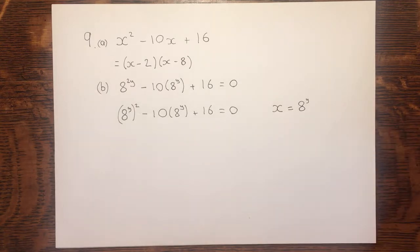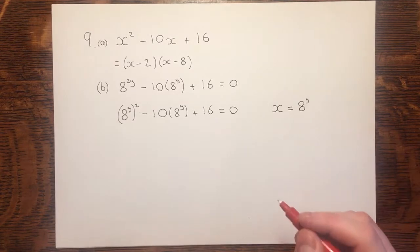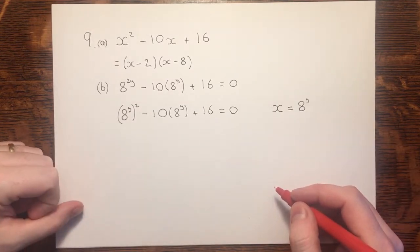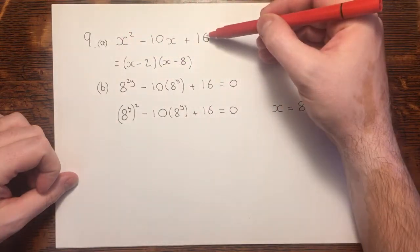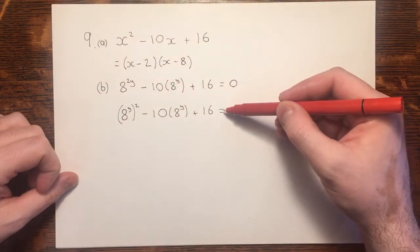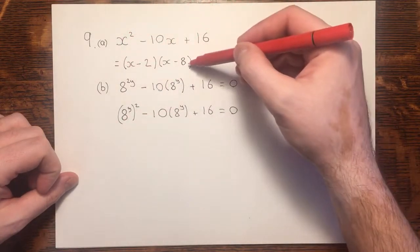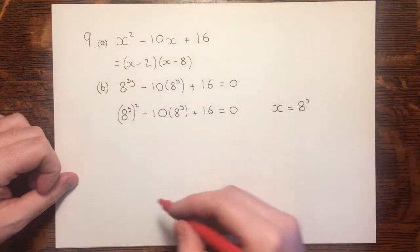I could make that substitution, and swap these out for x's at this point, and then change them back to 8 to the power y's at the end. However, I think that might result in more working than is needed. So what I'm going to do is, since this and this are in the same form, I'm going to use this form, but with the 8 to the power y.